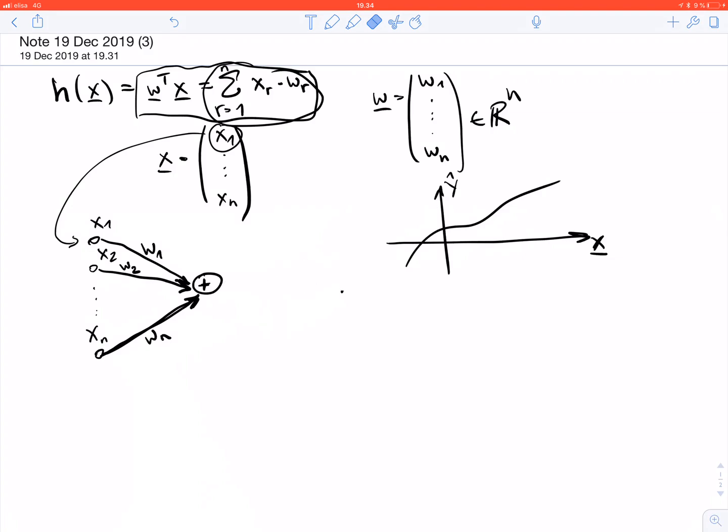One way to do this is adding here or applying to this weighted sum a non-linearity. This non-linearity we denote by a function g, and this is called activation function. There are different choices used in machine learning methods for this activation function.